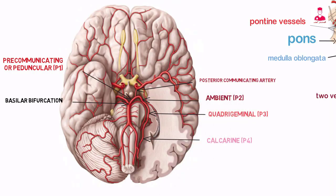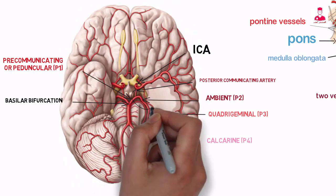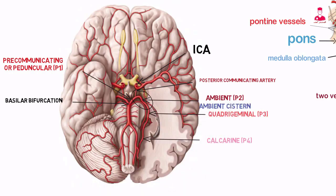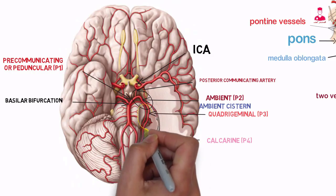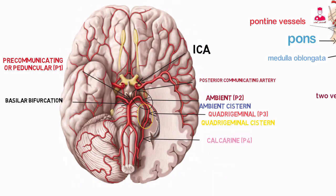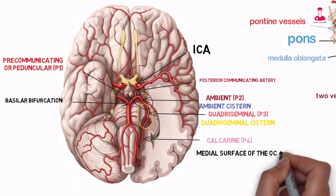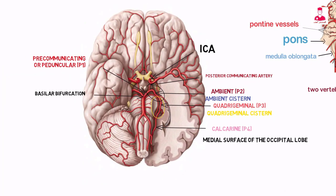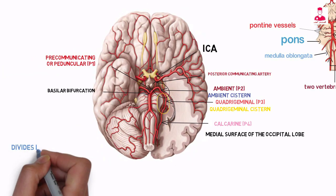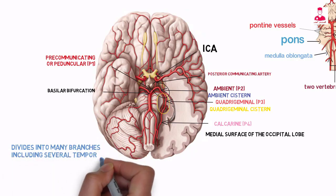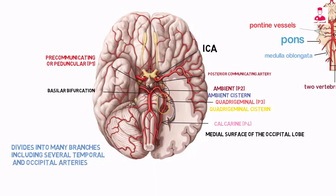The posterior communicating artery forms a connection between the posterior cerebral artery and the ICA. The ambient segment courses posteriorly in the ambient cistern around the midbrain, and then continues as the quadrigeminal segment located within the quadrigeminal cistern. The calcarine segment is located on the medial surface of the occipital lobe. The distal posterior cerebral artery frequently divides into many branches, including several temporal and occipital arteries.